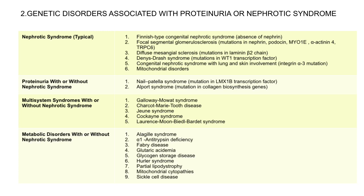Genetic disorders associated with nephrotic syndrome include: absence of nephrin, which causes the Finnish type of congenital nephrotic syndrome; mutations in nephrin, podocin, alpha-actinin-4, and TRPC6, which cause FSGS-type nephrotic syndrome; mutation in laminin-beta-2 chain, which causes diffuse mesangial sclerosis; mutation in WT1 transcription factor, which causes Denys-Drash syndrome; and integrin-alpha-3 mutation, which causes congenital nephrotic syndrome with lung and skin involvement.